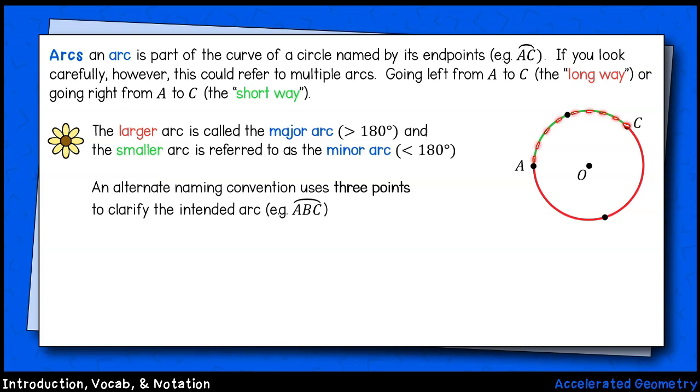If you look carefully at the path traced between points A and C, you may notice that there are two ways to get there. There's the shorter way, following the green path, and there's the longer way, following the red path. The larger arc, or any arc greater than 180 degrees, is referred to as a major arc, while the shorter arc, or any arc less than a semicircle, that is, 180 degrees, is referred to as a minor arc.